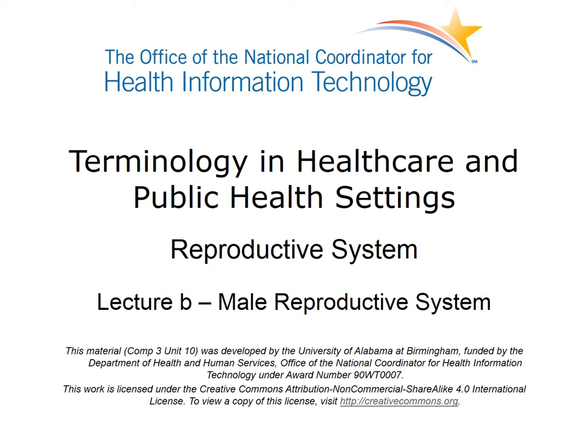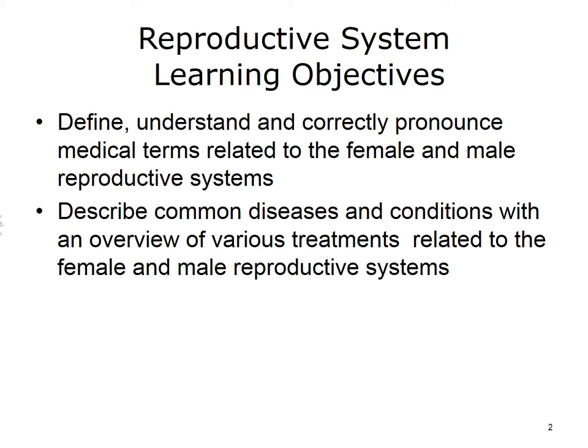Welcome to Terminology in Health Care and Public Health Settings, Reproductive System. This is Lecture B, Male Reproductive System. The objectives for this unit are to define, understand, and correctly pronounce medical terms related to the female reproductive system and male reproductive system, and to describe common diseases and conditions with an overview of various treatments related to both systems.